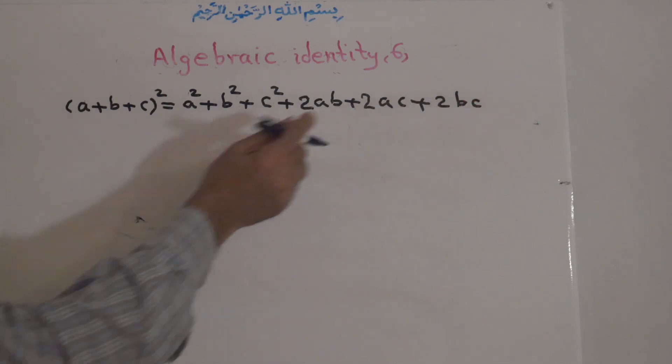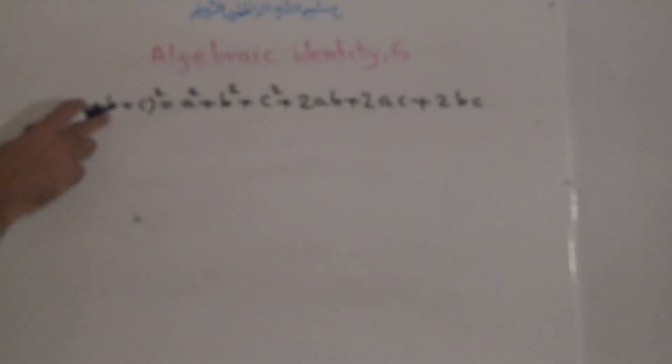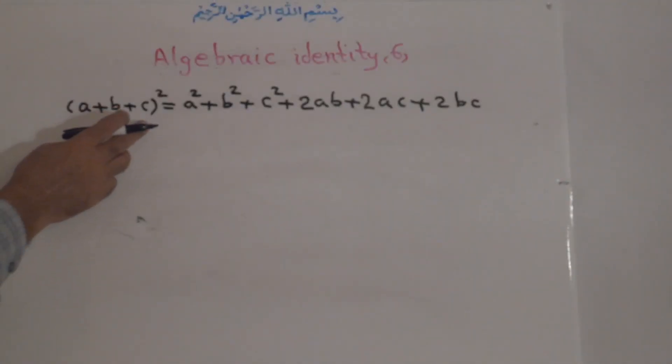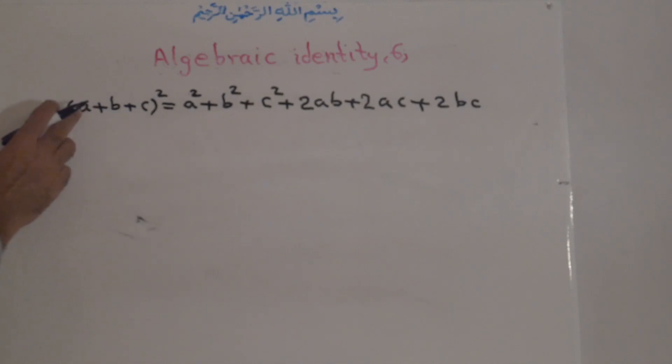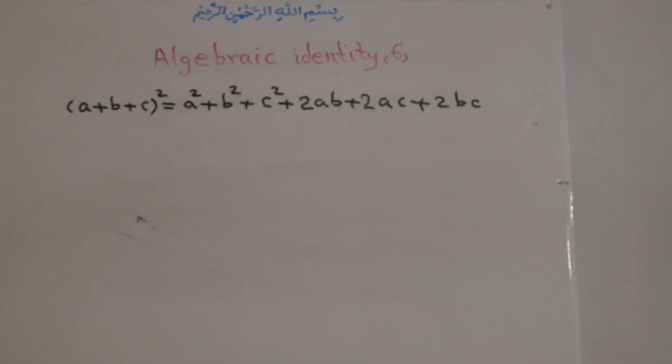It means: square of this, square of this, square of this, 2 times this for this, 2 times this for this, and 2 times this for this.